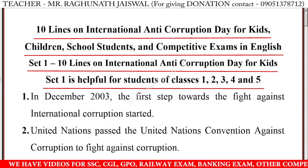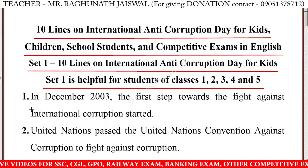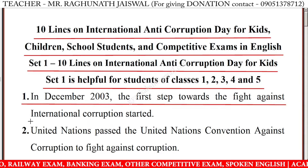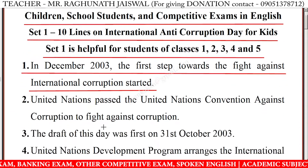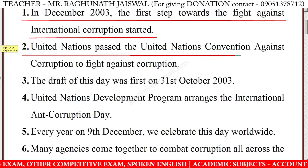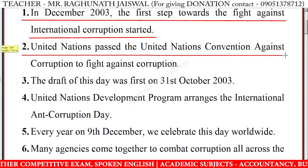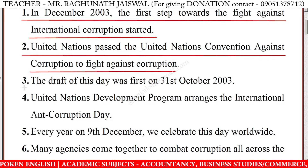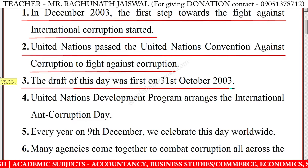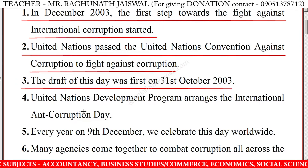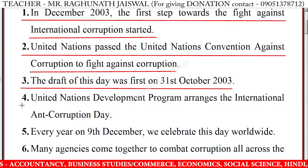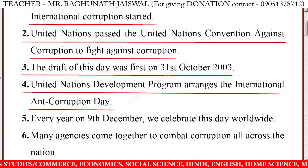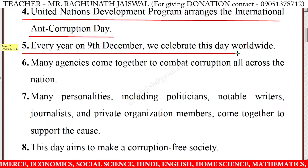1. In December 2003, the first step towards the fight against international corruption started. 2. The United Nations passed the United Nations Convention Against Corruption to fight against corruption. 3. The draft on this day was first made on 31st October 2003. 4. The United Nations Development Programme arranges the International Anti-Corruption Day.